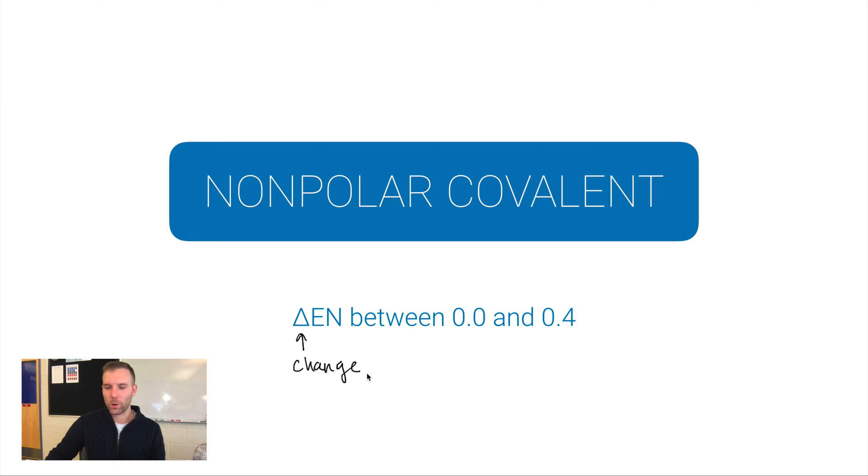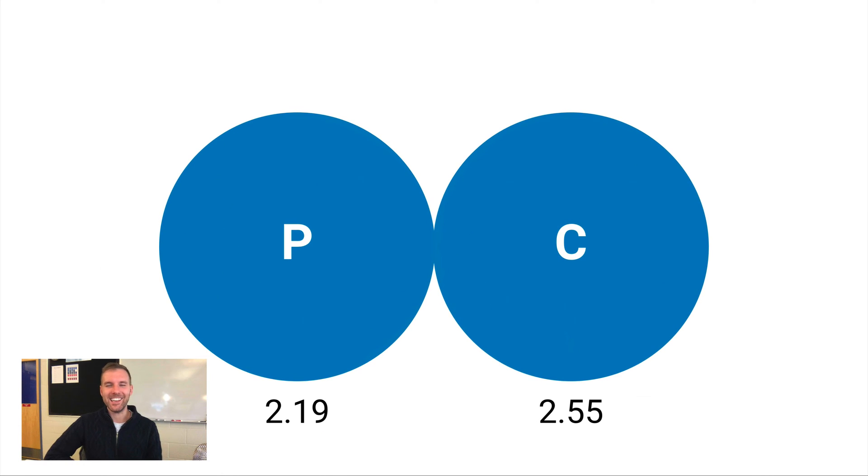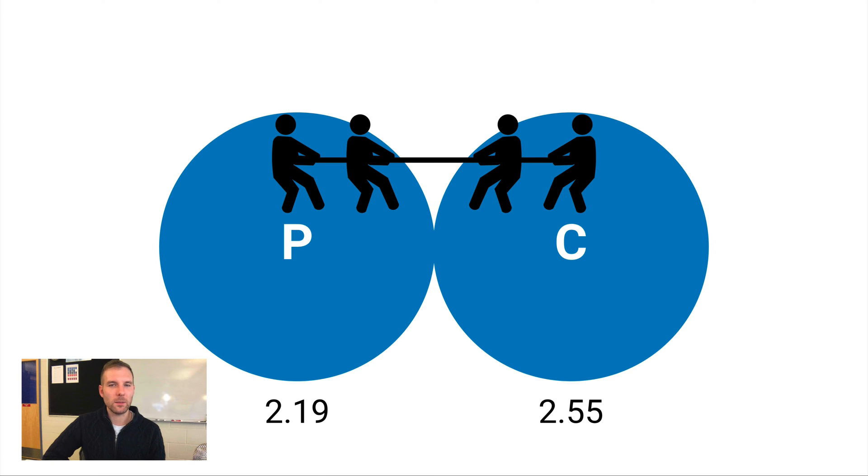When the electronegativity difference between the two elements in a covalent bond is so small, we call it a non-polar covalent bond. Here's why: let's go back to P and C. If this is the bond between phosphorus and carbon, I think of this almost like it's a tug-of-war. Phosphorus and carbon are essentially evenly matched when it comes to pulling on the shared electrons between these two elements. That means these two electrons are going to spend about equal time between phosphorus and carbon, so there isn't going to be a buildup of charge on one side of the bond or the other.